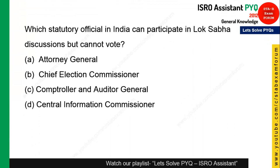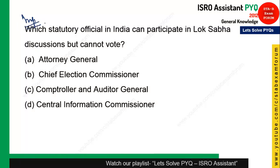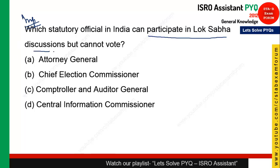The next question: which statutory official in India can participate in Lok Sabha discussions but cannot vote? Only members can vote. Among statutory officials, only the Attorney General can take part in Lok Sabha discussions but still cannot vote. Option A is the right answer.